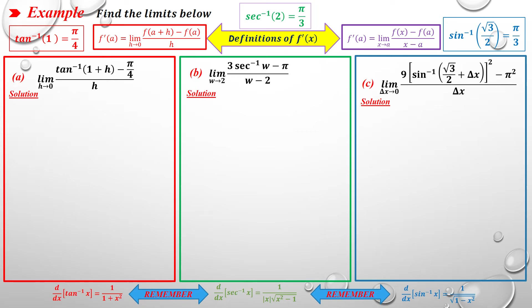In this video we find limits using the definition of the derivative. In part A, the limit is [arctan(1+h) - π/4] / h as h→0. We can rewrite π/4 as arctan(1), because arctan(1) = π/4, which comes from the fact that tan(π/4) = 1.